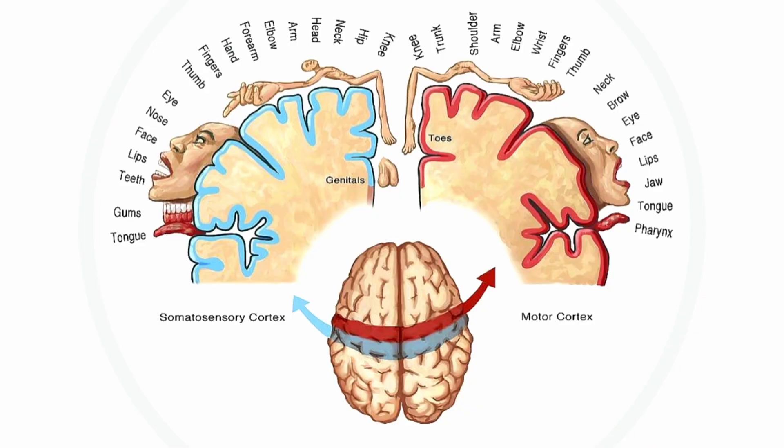El primer punto es saber quién soy. El cerebro tiene unas partes dedicadas a ciertas zonas que están representadas en él. Esas partes representadas en el cerebro son aquellas partes de mi cuerpo que yo puedo mover a voluntad. Yo puedo pensar en la mano y mover la mano, puedo pensar en el pie y mover el pie. No puedo mover a voluntad lo que no está en el cerebro, lo que no está en esa representación cortical.